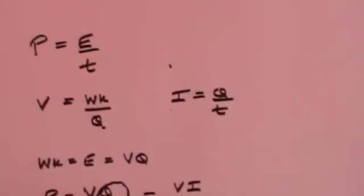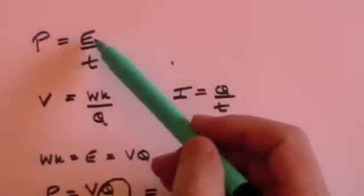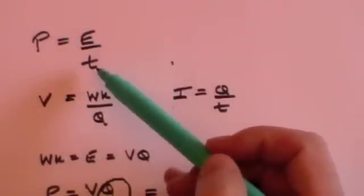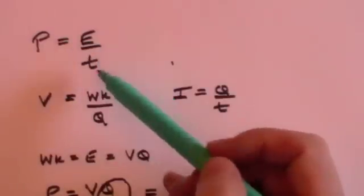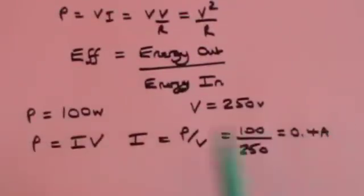right back to our starting point, power is energy divided by time. Energy is measured in joules, time is measured in seconds. So power is joules per second, but it's also given the name watts.